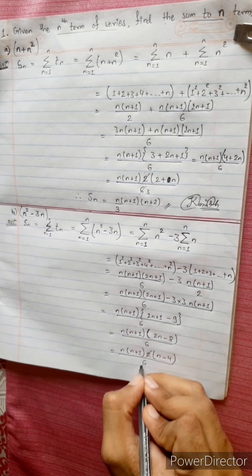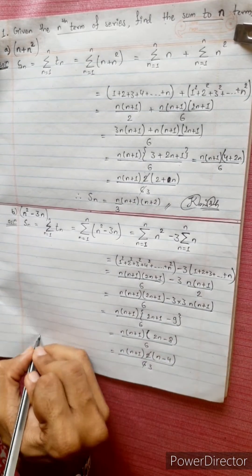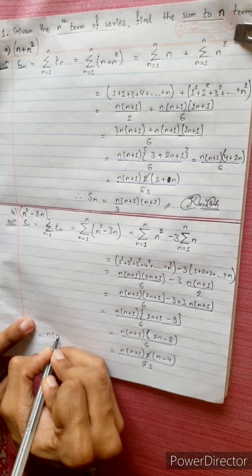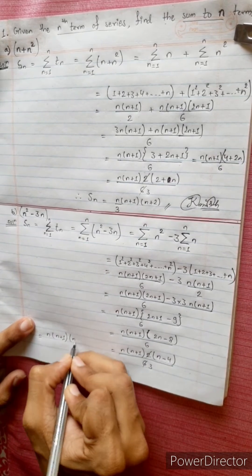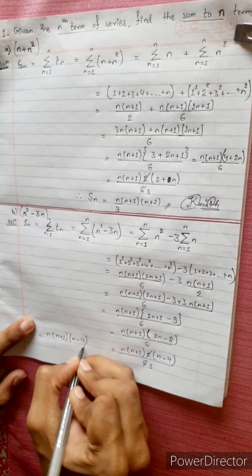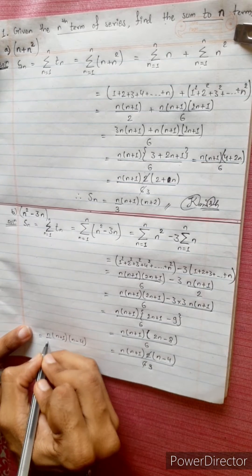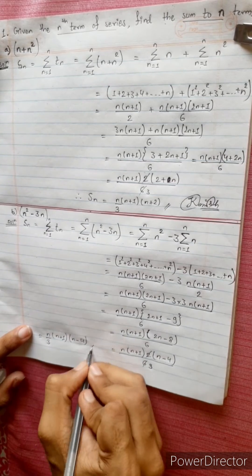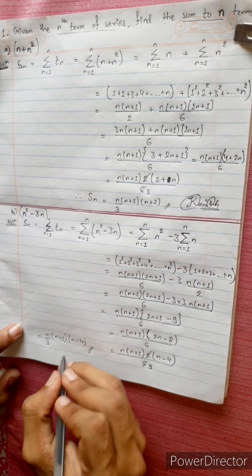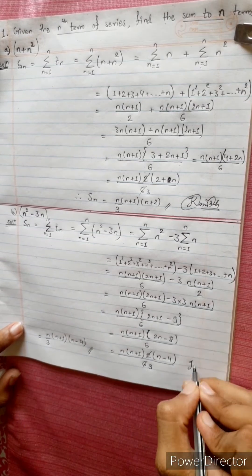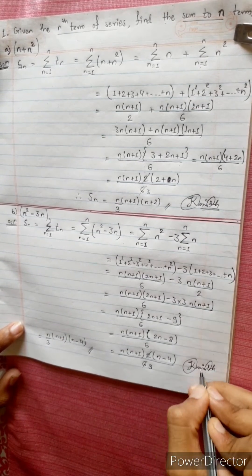After simplification, dividing by 6 with factor 2 common: the final answer is n(n+1)(n minus 4) divided by 3.